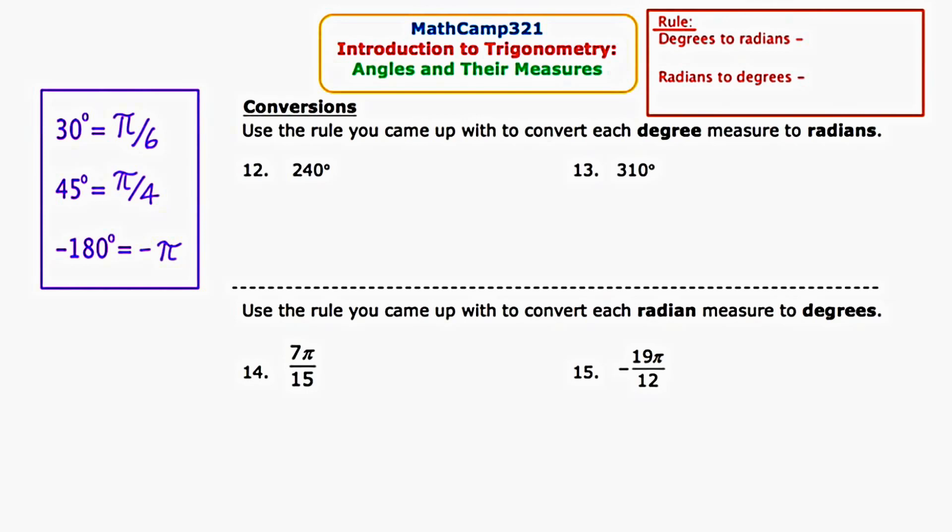On the previous slide, we used the definition of a radian to convert from degrees to radians. I had also proposed a challenge for you to find a way to make the conversion more quickly. You'll notice that on this slide in the purple box are the results from the three conversions that we made. The shortcut is if you're given degrees and you want to convert to radians, you simply need to do is multiply the degree measure by π/180. Conversely, if you're given the radian measure and you want to find the degree measure, multiply the radian measure by 180/π.